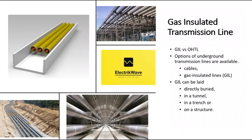Nowadays, different options of underground transmission lines are available. The most common solution are cables; however, gas insulated lines are also applied as an alternative. GIL can be laid directly buried, in a tunnel, in a trench, or on a structure, as shown here in various pictures.